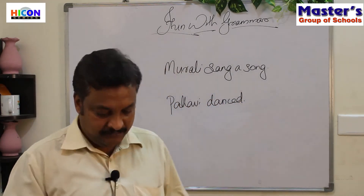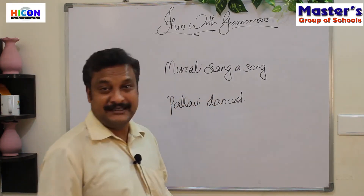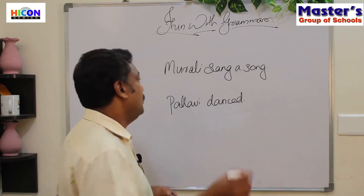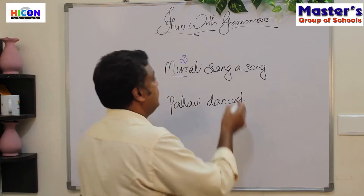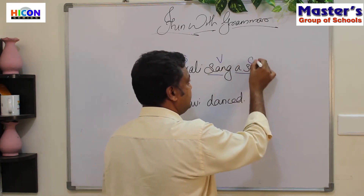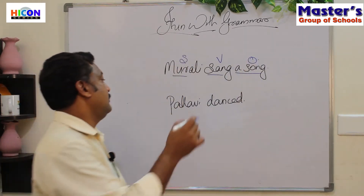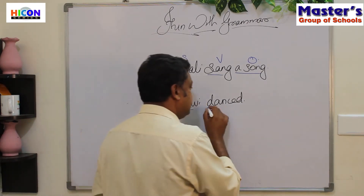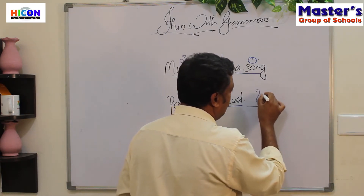We have written two sentences on the board: 'Murali sang a song' and 'Pallavi danced.' Now, Murali is the subject of this sentence, sang is the verb, and a song is the object. Pallavi is the subject of this sentence, danced is the verb, and there is no object.